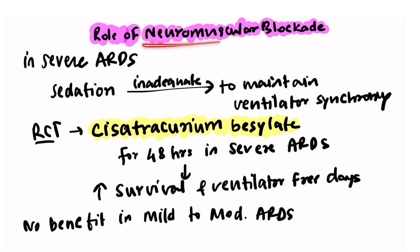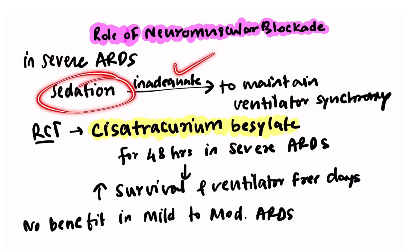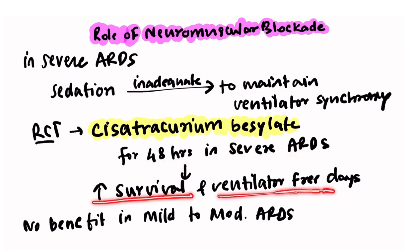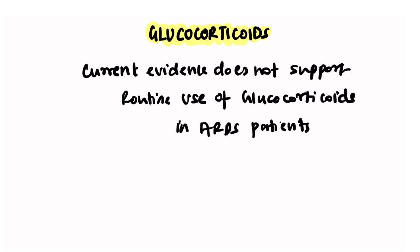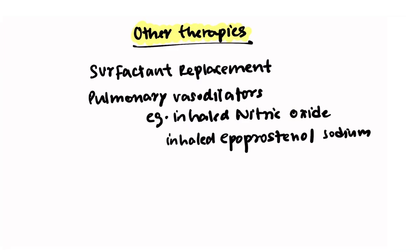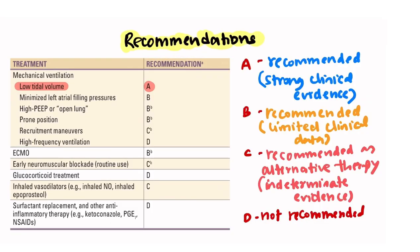In severe ARDS, sedation alone is often inadequate to maintain ventilator synchrony. A randomized controlled trial showed that cisatracurium besylate for 48 hours in severe ARDS patients may increase survival and ventilator-free days, though there was no benefit in mild to moderate ARDS. Currently there is no evidence supporting routine use of glucocorticoids in ARDS. Other therapies including surfactant replacement, inhaled nitric oxide, and inhaled epoprostenol sodium also showed no benefit.